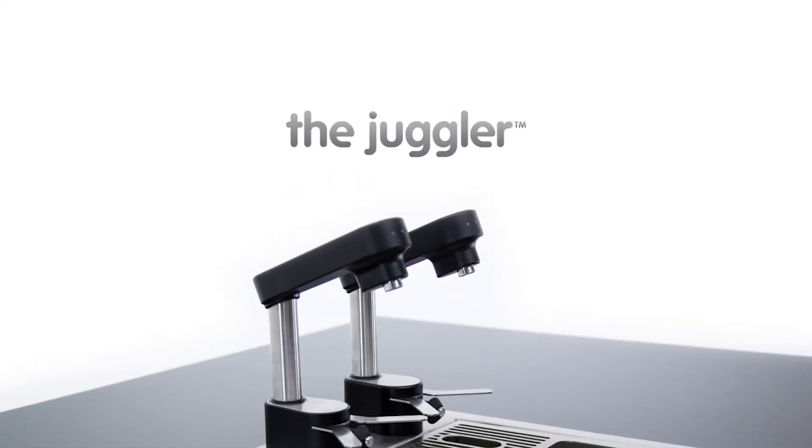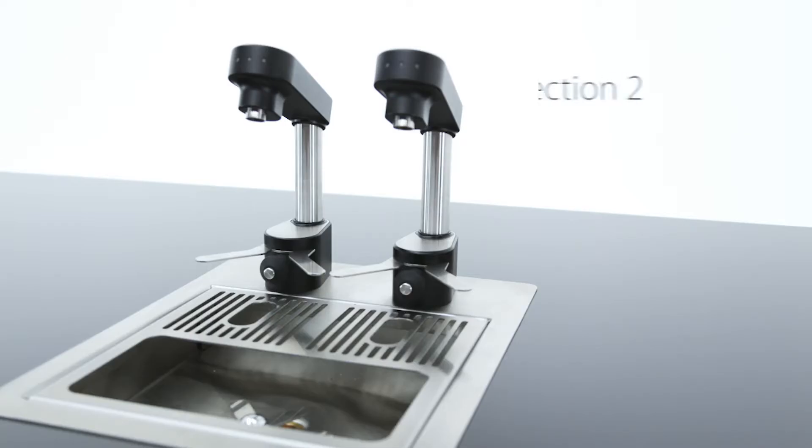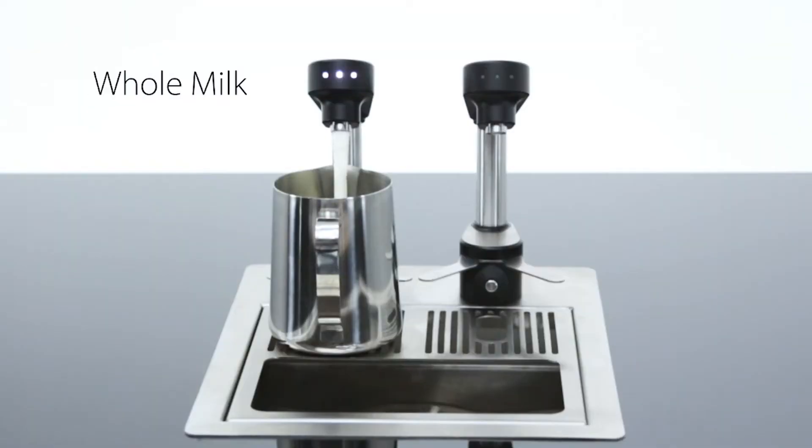The Juggler is a chilled milk dispenser designed for use in cafes. The Juggler double dispenses whole milk from one tap and reduced fat milk from the other.